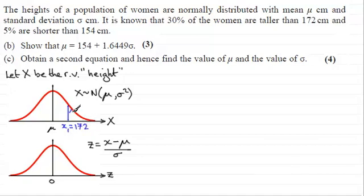And this area to the right of it, which is greater than 172, is going to be 30%, 0.3 or 0.30. And what we do then is we project this down onto our standardized graph here.